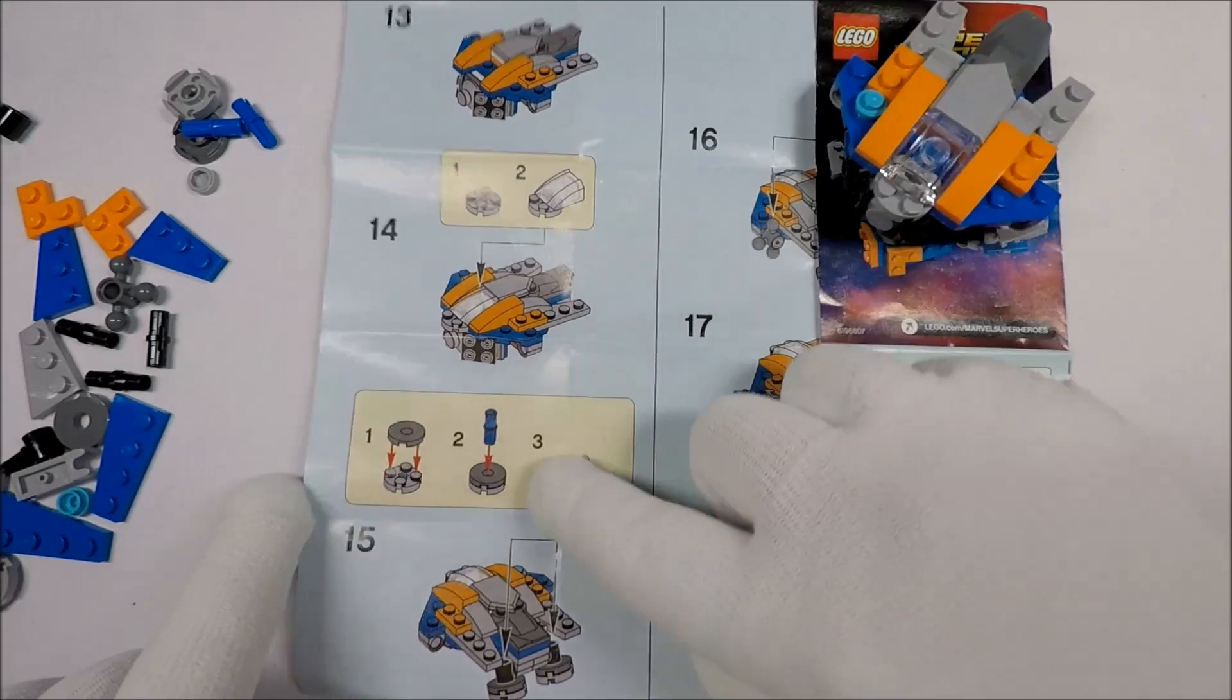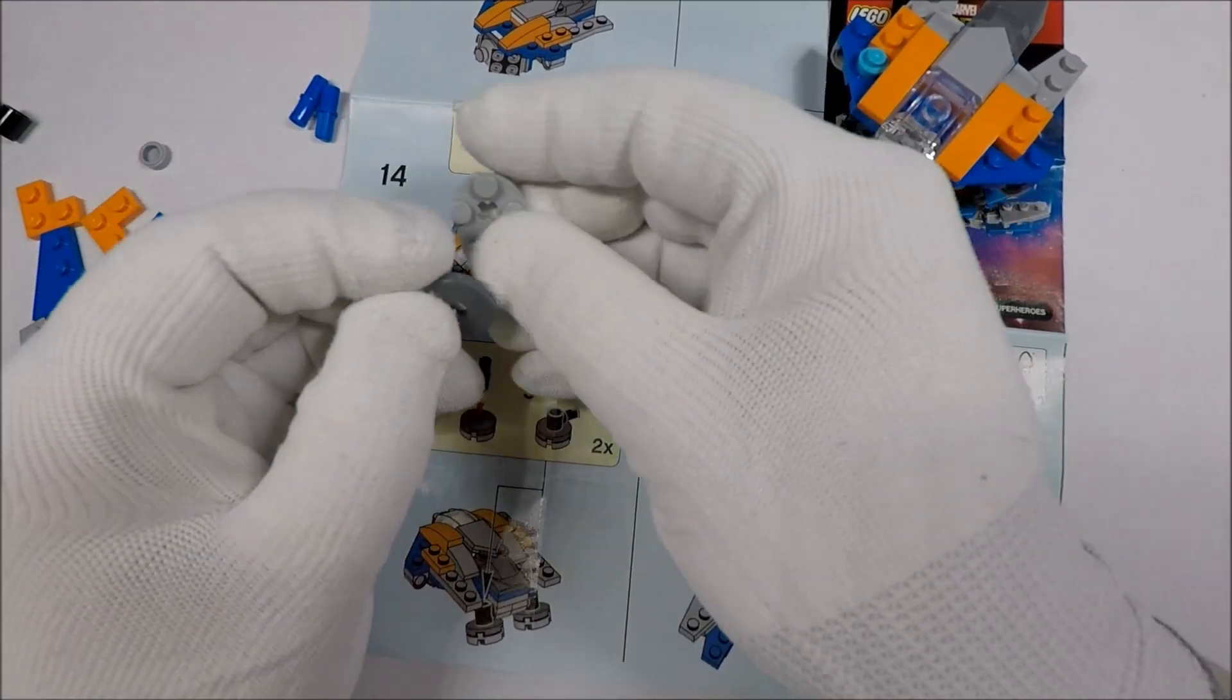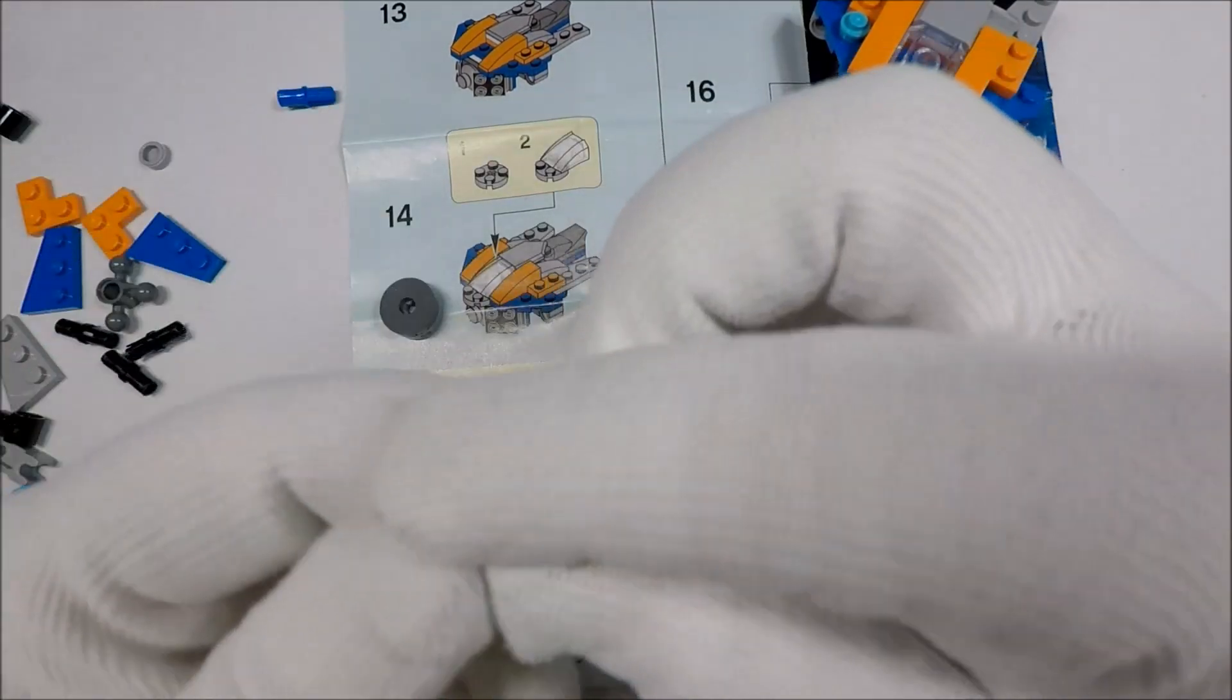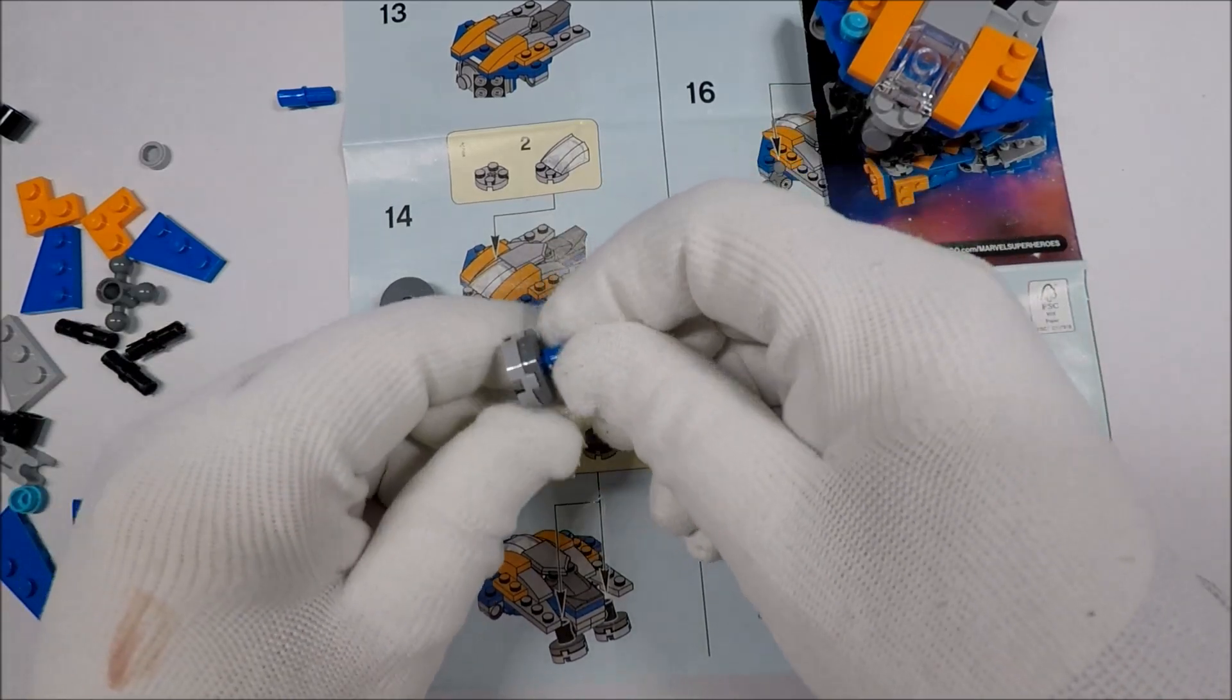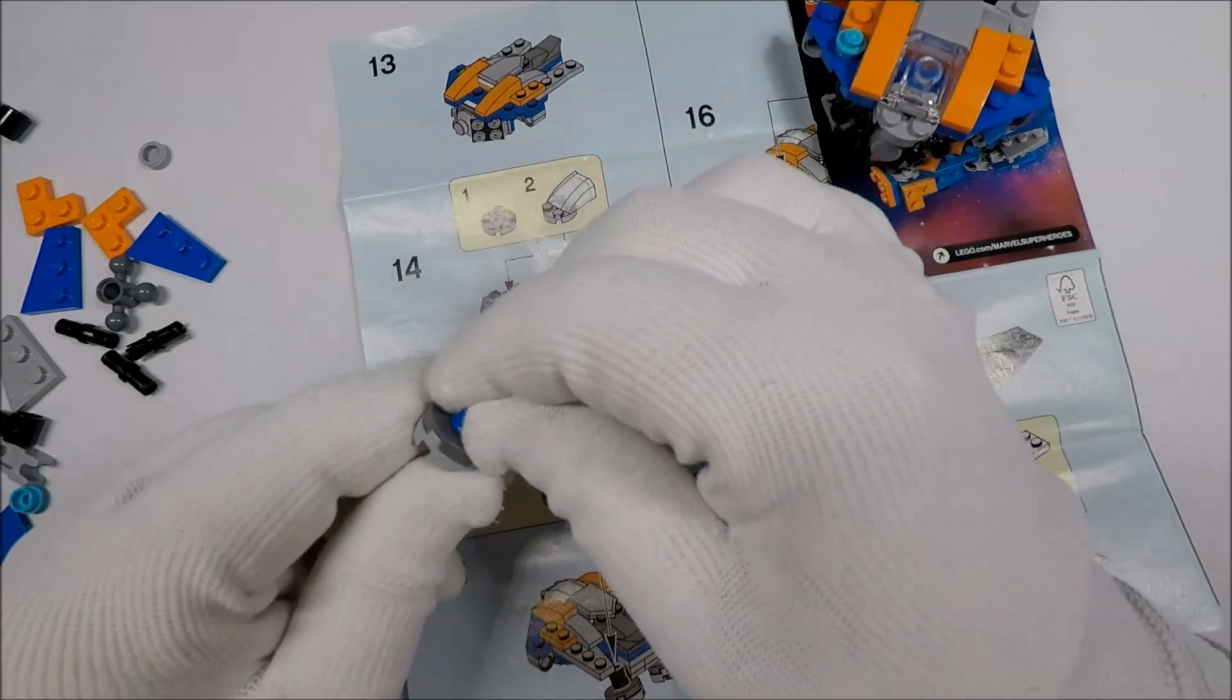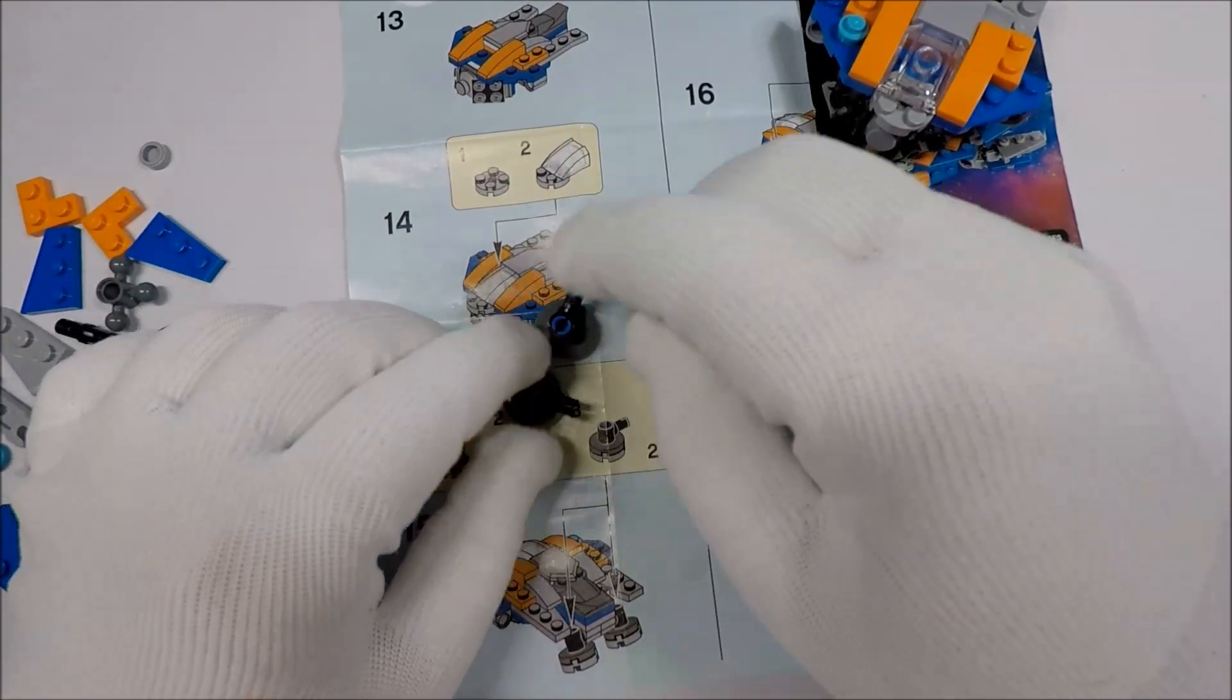So we need two of these. So one and two. And then this goes here and this one goes here. And then this clips in and this clips in. And then this right here.